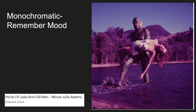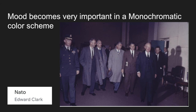Let's also remember back to our mood presentation. So what was purple? What did purple represent? Mystery, right? You'll notice there's an Aquaman monster — Perils of Julia and Gilman — it's quite a silly picture, another sci-fi no doubt. And mood becomes very important in a monochromatic color scheme as well, because you only have one color driving the whole mood of the picture.